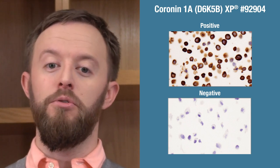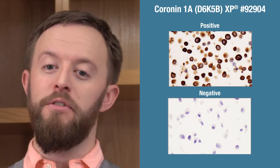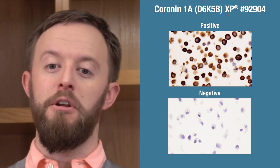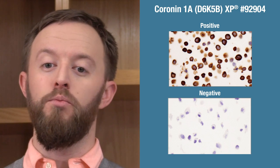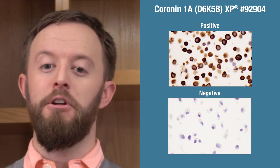Cell pellet controls are often used when starting a new set of experiments or receiving a new antibody, and you want to know that it will perform as expected with your IHC protocol. Tissue-based controls can be useful if there is a tissue known to express your protein highly and another known to have much more restricted expression. But for many proteins, it's not so straightforward to determine which tissues to use as controls. In this situation, cell pellets with differential expression of your protein can be valuable.